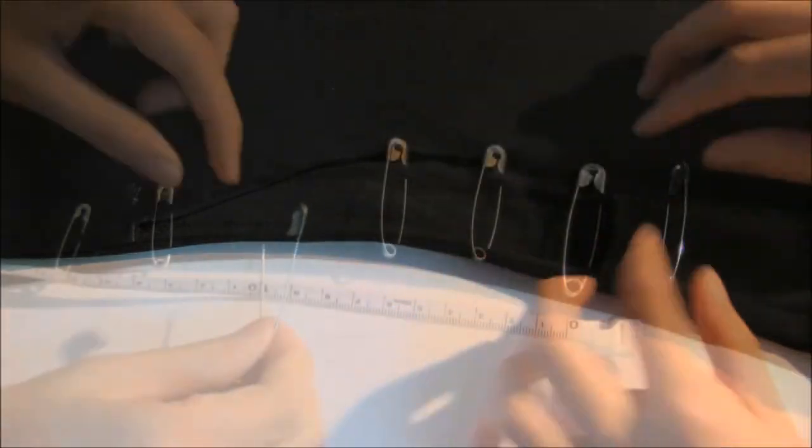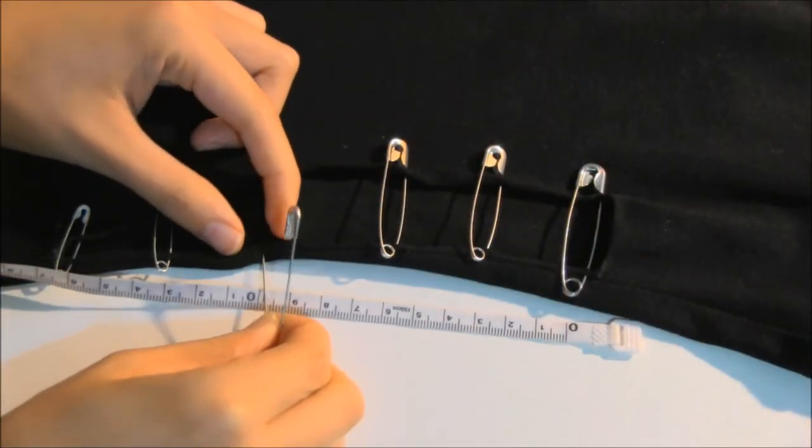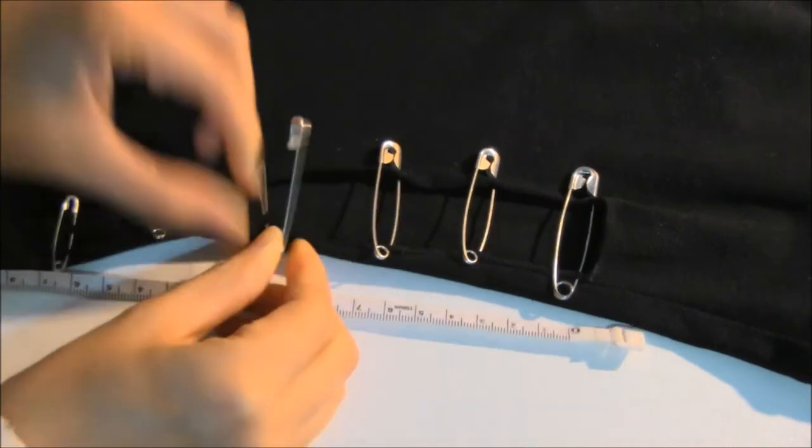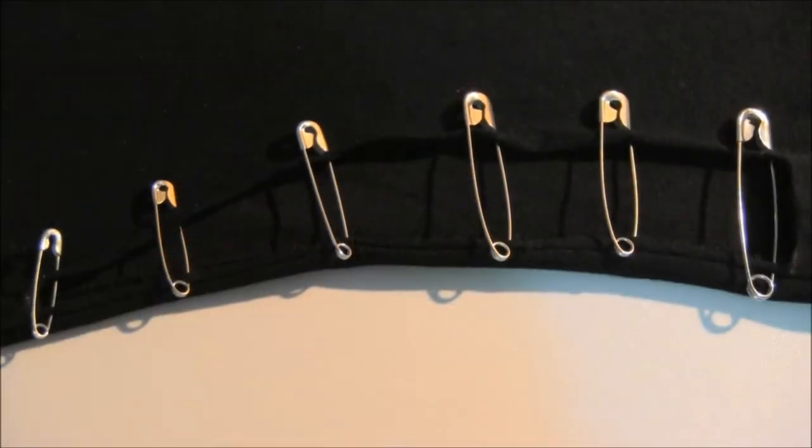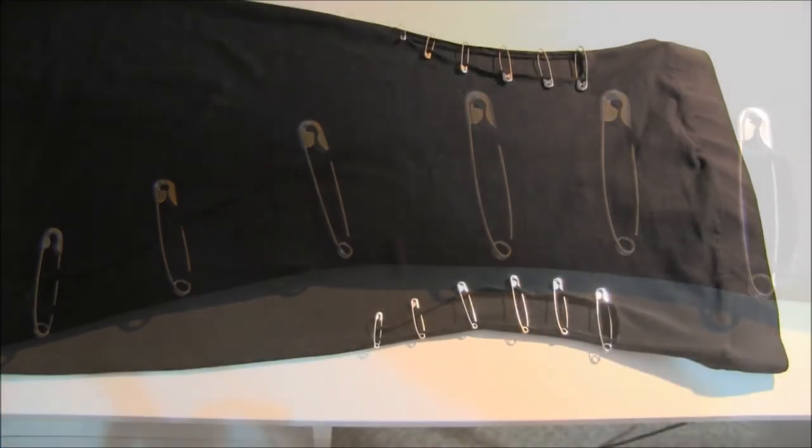Starting with the largest safety pin, place it at the top of the cutout and then gradually decrease the size of the safety pin as we go down. And we are done with the cutout side. Repeat the exact same steps on the other side.